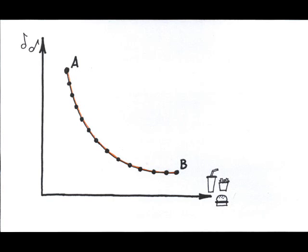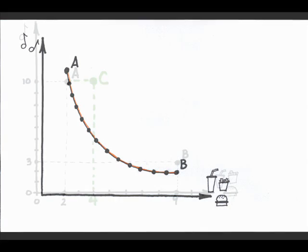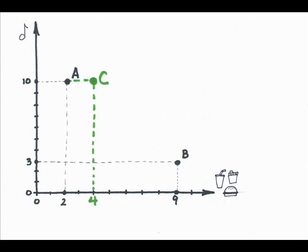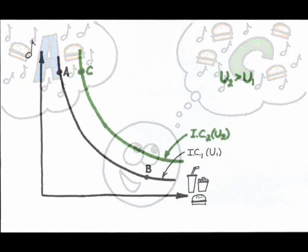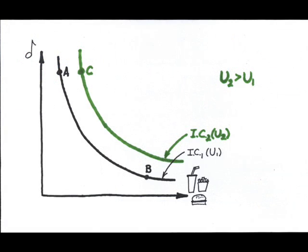Now, what if I ask the same consumer to compare bundle A, 2 meals and 10 CDs, to a new combination bundle C, 4 meals and 10 CDs? Which one will the consumer choose? Because we've assumed that more is preferred to less, this consumer must choose combination C, 4 meals and 10 CDs, over combination A, 2 meals and 10 CDs. This means that bundle C is on a new indifference curve, one that yields a higher level of utility.